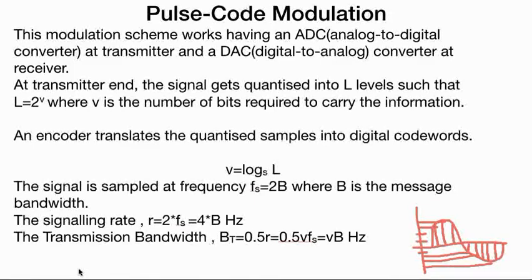An encoder translates the quantized samples into digital code words. For V bits, log base 2 of L equals V, that means 2 to the power V equals L. V is the number of bits and L is the number of levels.